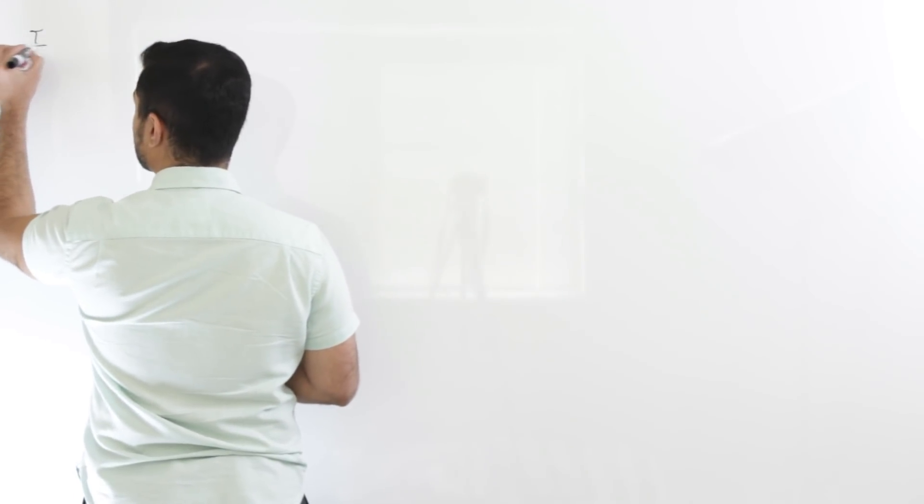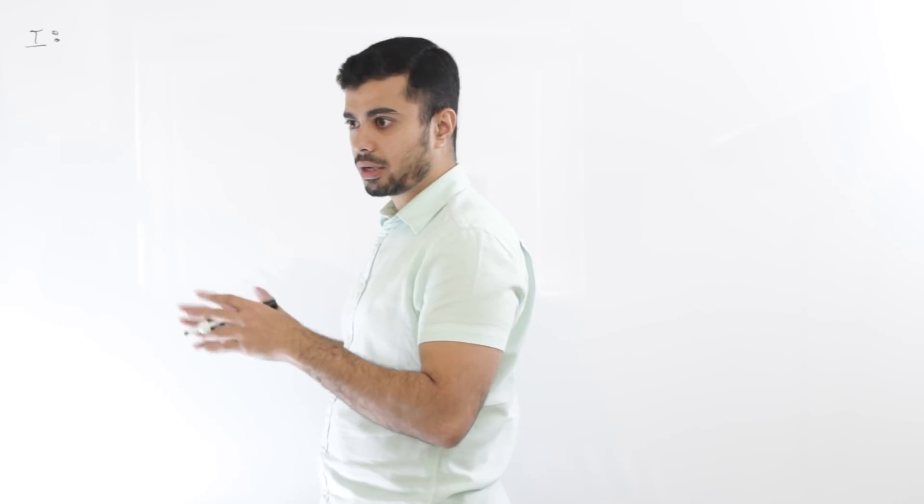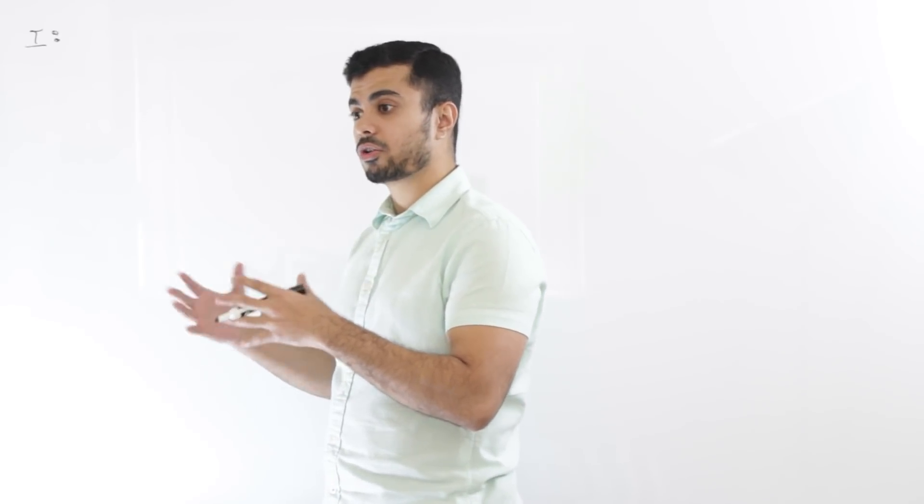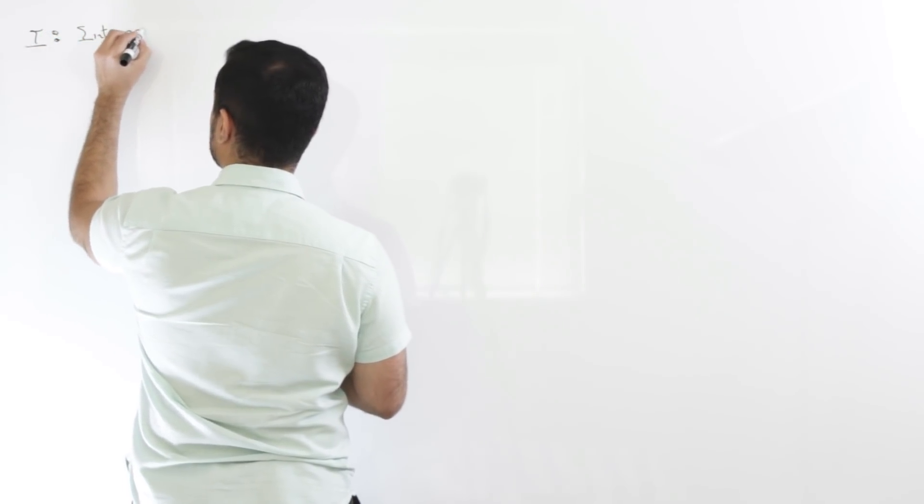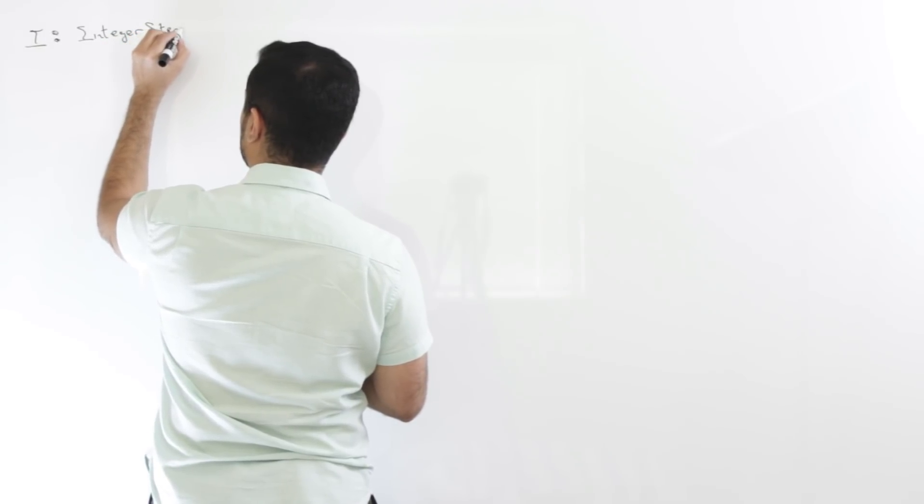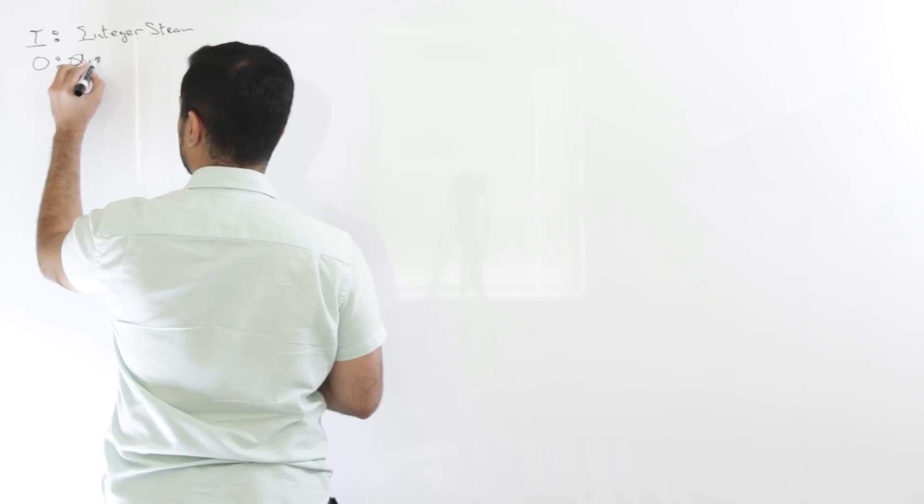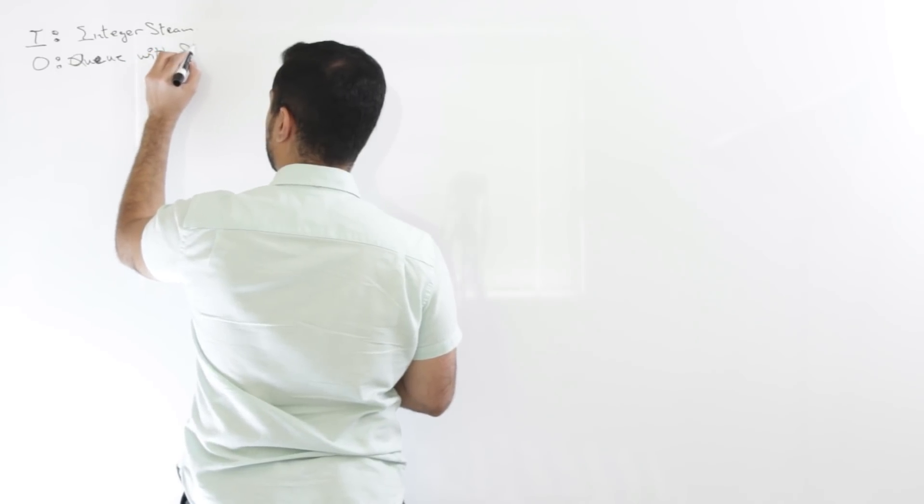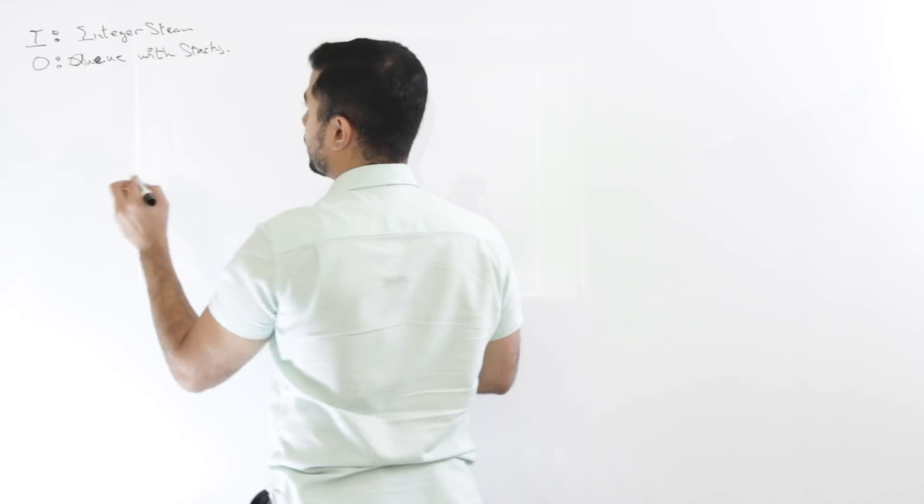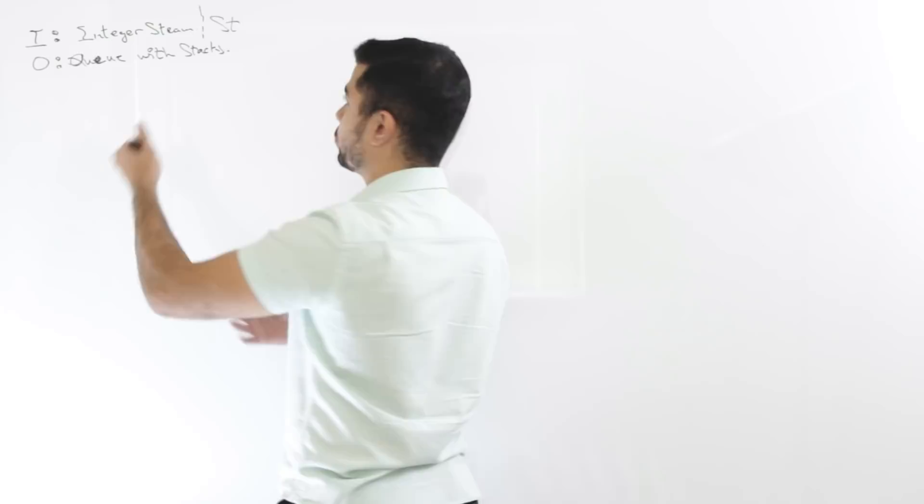So let's say, in this case, I have an input of random integers that are coming in, and I want to mimic a queue using two stacks, right? Okay. So let's say inputs are just integer. Let's say it's an integer stream, which is basically pushing off integers. And output should be a queue with stacks. And let's say the input may actually even be a stack, you know, stack and then the input to the stacks will be the integers.